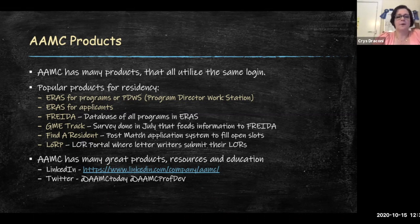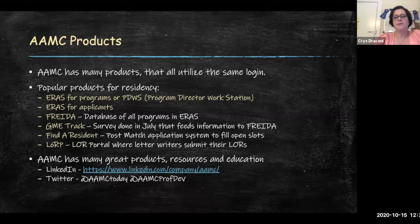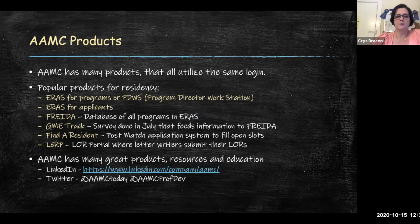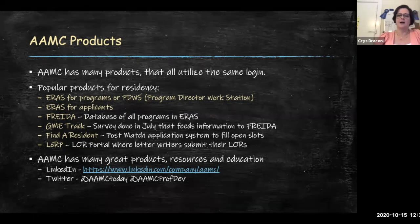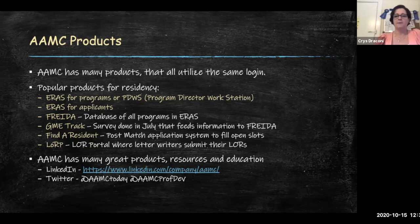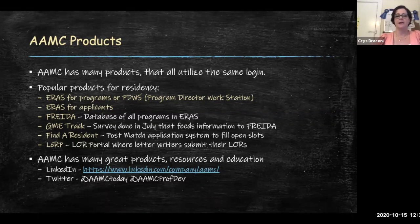The last important system is called the LORP — the Letter of Recommendation Portal. This is the portal where letter writers, such as your program director, chair, or various faculty, submit letters of recommendation for a particular candidate. A medical student or applicant getting their application ready will designate their letter writers in the ERAS for applicants system, and then an email should go out to those letter writers saying they've been requested to write a letter.